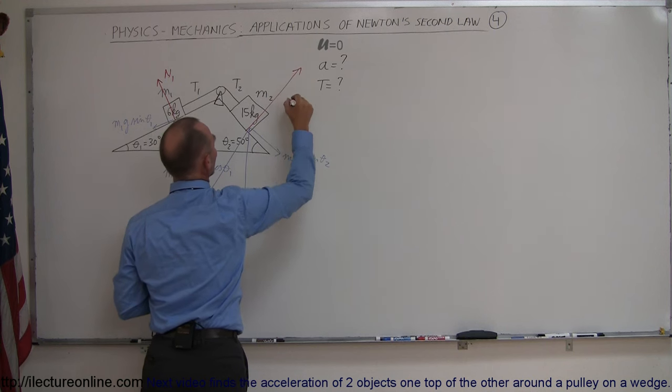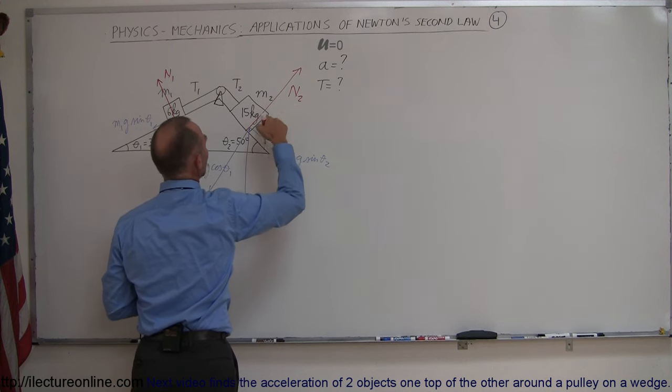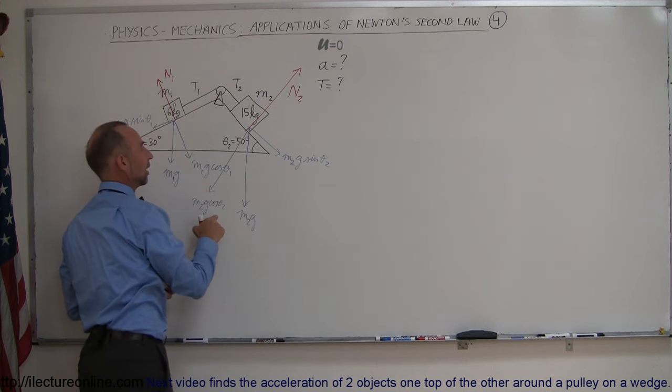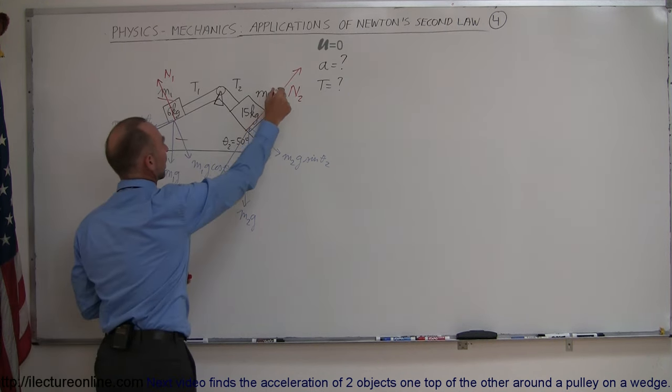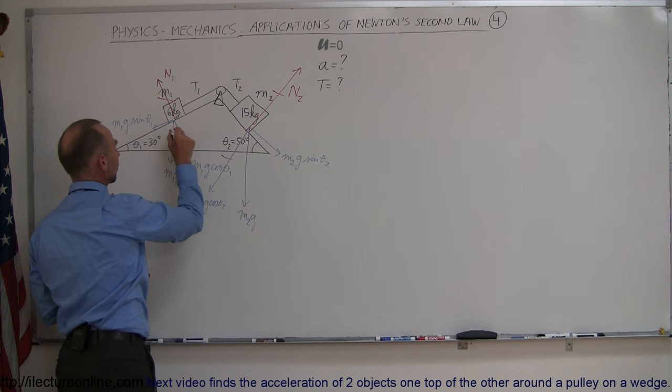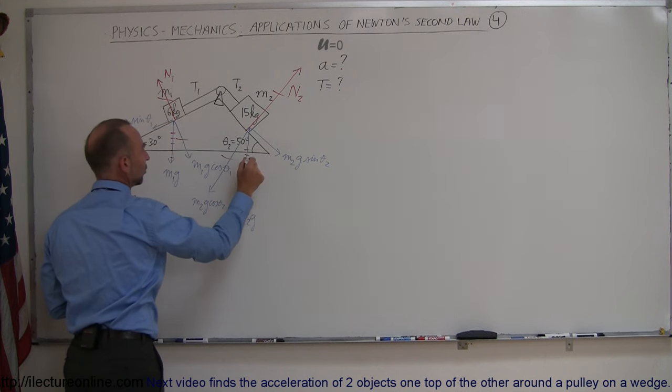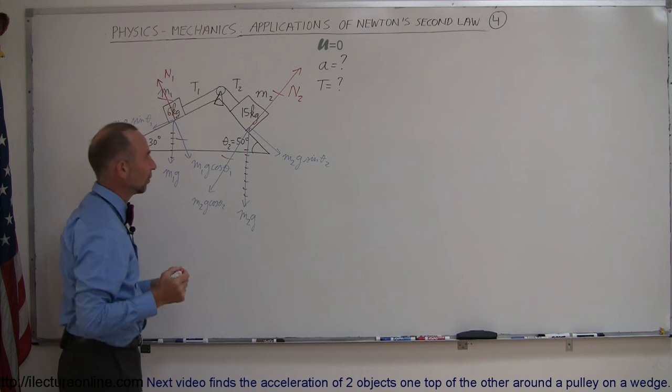And then here we have n2. Again it's equal in magnitude to m2g cosine theta and opposite in direction so that these cancel each other out. This one is gone because I divided that into the components, that one is gone as well.